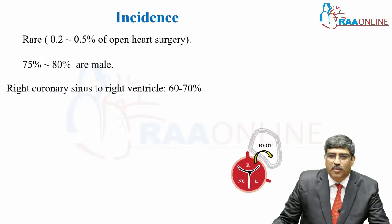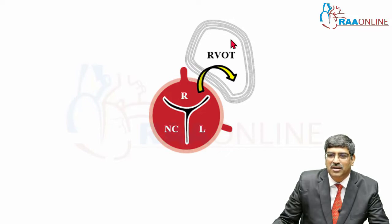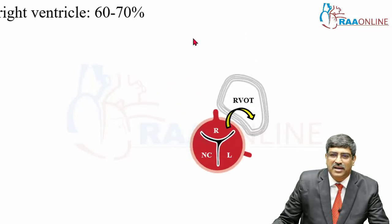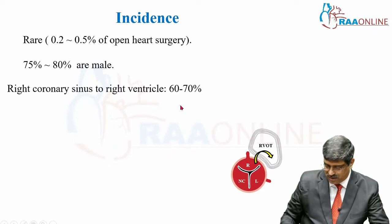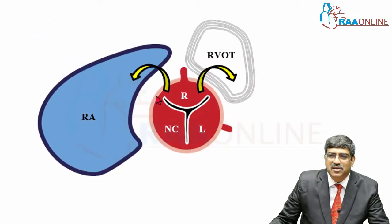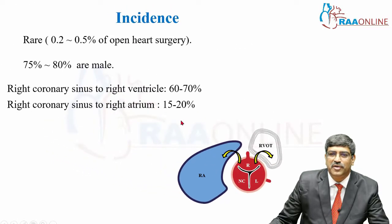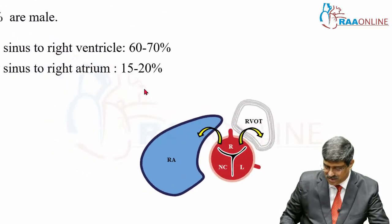Most commonly, it arises from the right coronary sinus and goes into the right ventricular outflow tract — that is 60 to 70 percent of patients. The next common variety is it arises from the right coronary sinus and goes into the right atrium, which is about 15 to 20 percent.